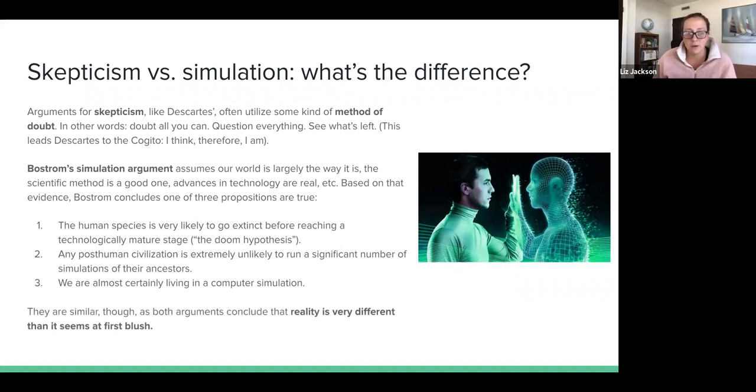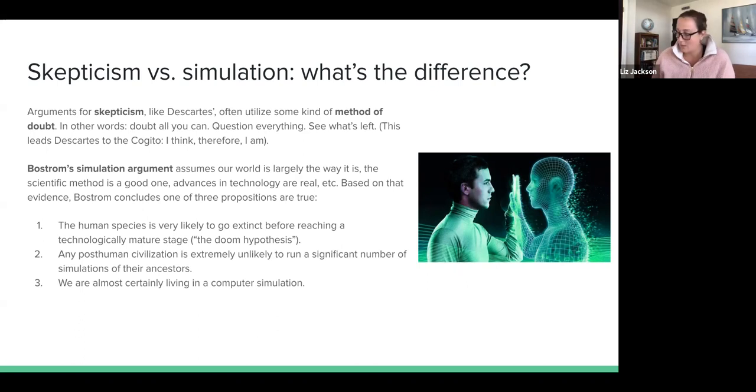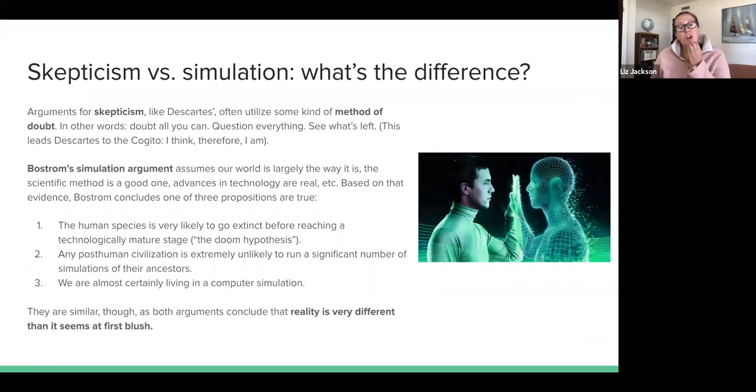While these arguments are similar, because they conclude like reality is different than it seems at first blush - if the simulation argument is right, it is very likely that the things you perceive and even the people in your life are computer simulations. So Bostrom is not using the method of doubt. Bostrom's not saying let's doubt everything we can. Bostrom's saying based on these advances in technology, reality is different than it seems at first blush. We're likely living in a computer simulation. Descartes also thinks reality is potentially very different than it seems at first blush, but Descartes and other skeptics do that using the method of doubt.